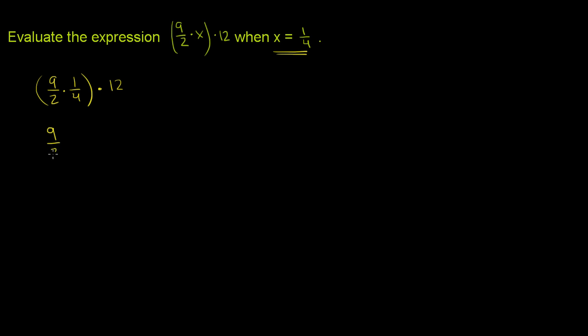It doesn't matter if we have a bunch of numbers and we're multiplying them. So we have 9 halves times 1 fourth times 12. The associative property of multiplication tells us that it really doesn't matter which multiplications we do first, when we just have a bunch of numbers being multiplied. So we can do these first.